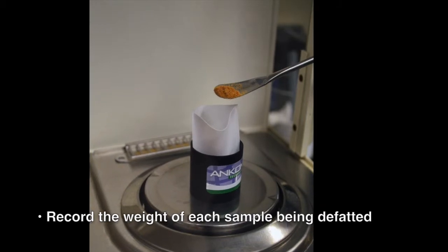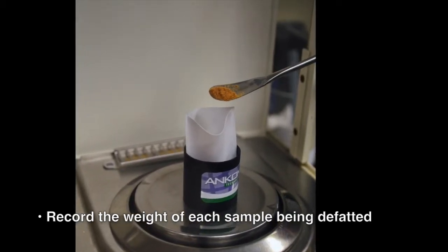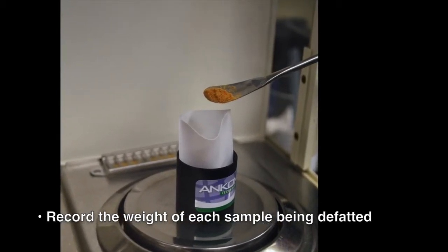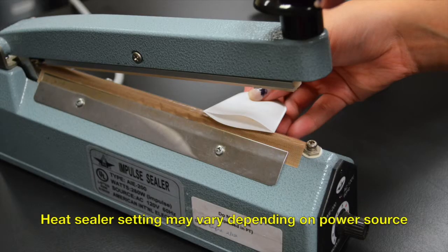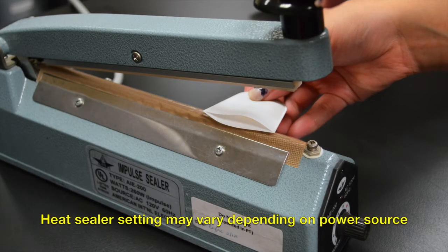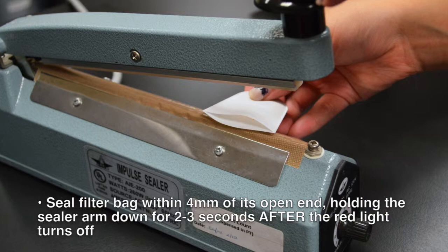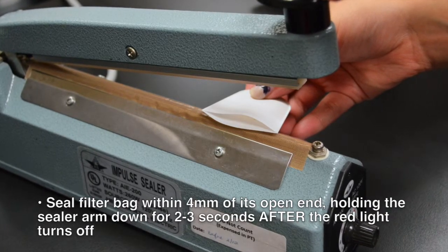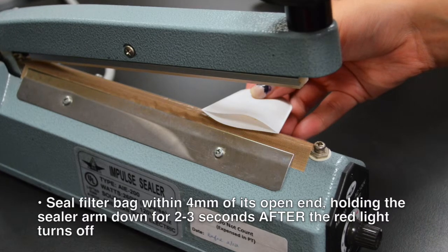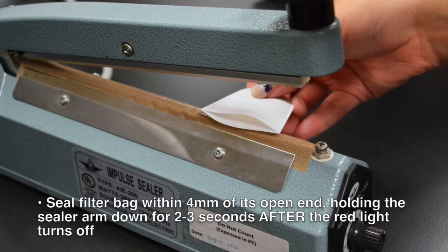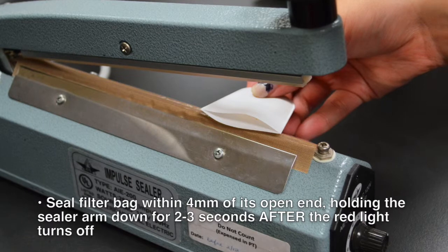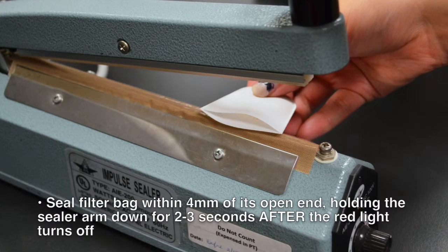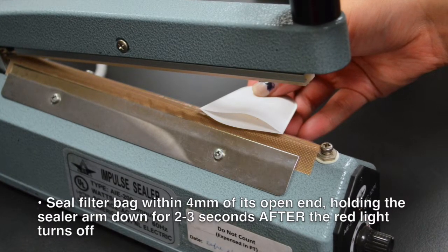Place each sample to be defatted in the appropriate XT4 filter bags and record the weight. Heat seal the filter bags. With the heat sealer set at 5 or 6, seal the filter bag within 4 millimeters of its open end. Be sure to hold the sealer arm down for 2 to 3 seconds after the red sealer light turns off. This allows the filter media a chance to cool.